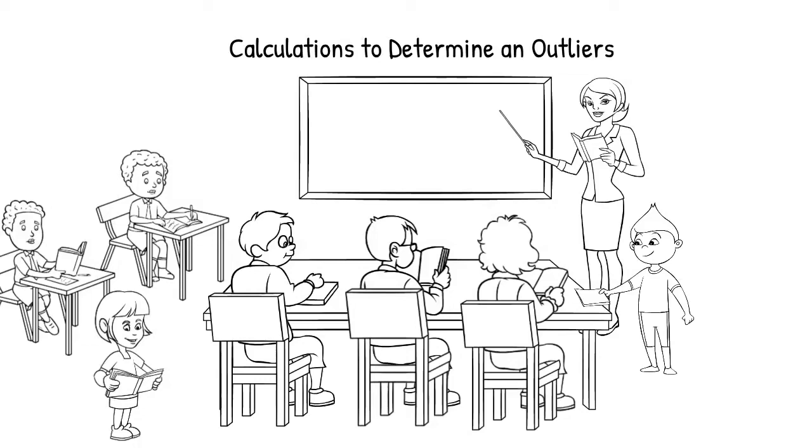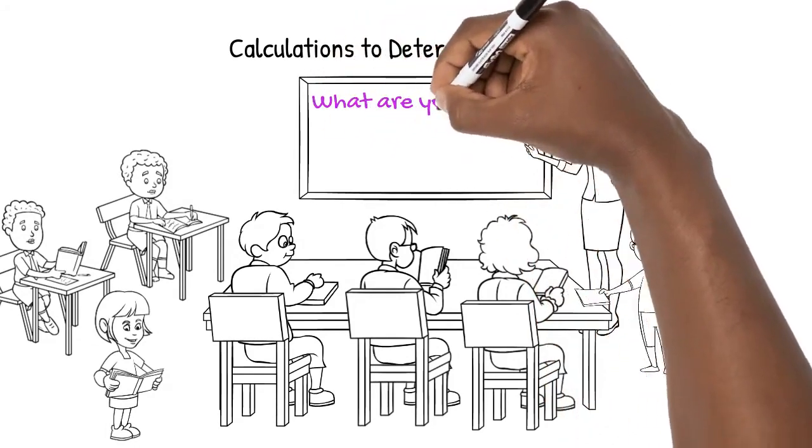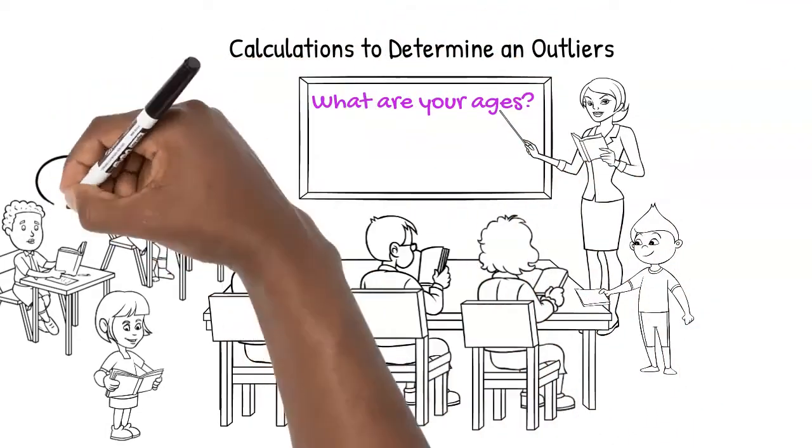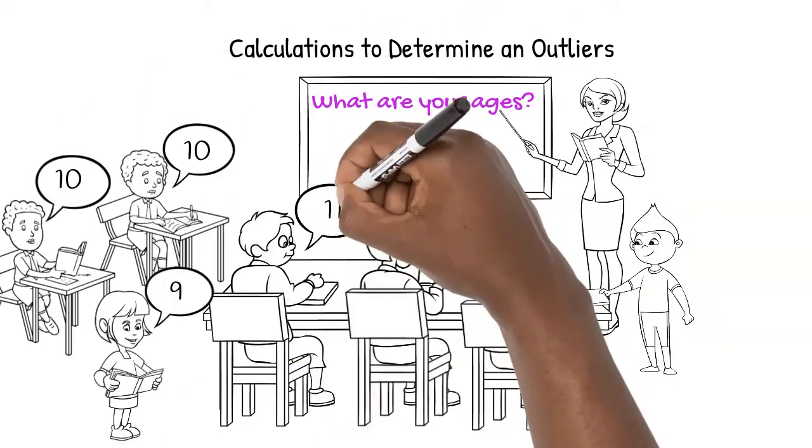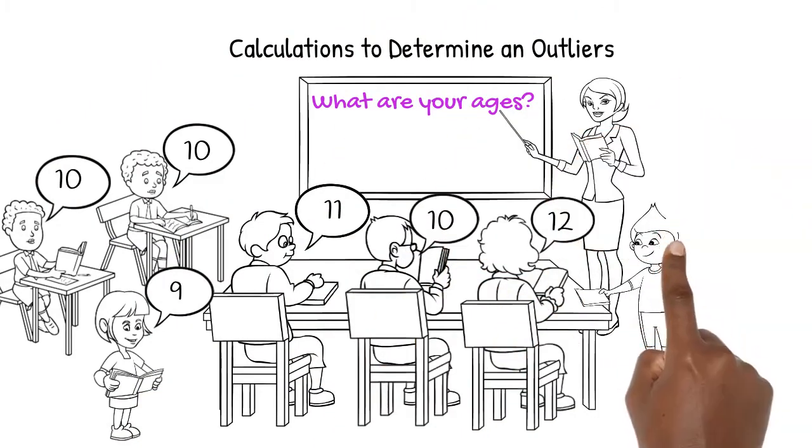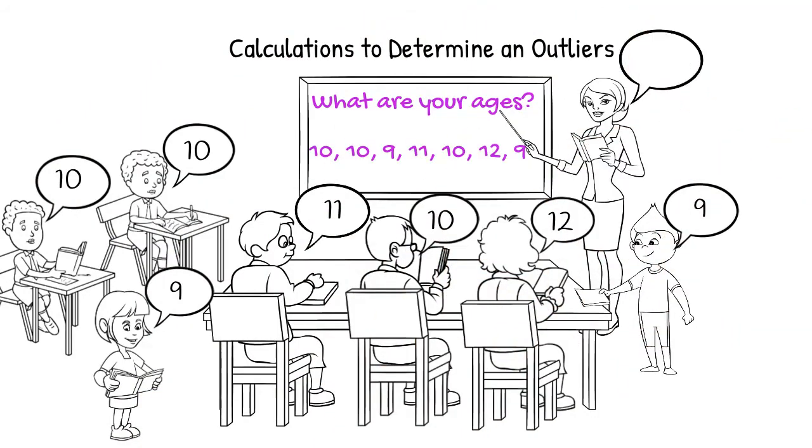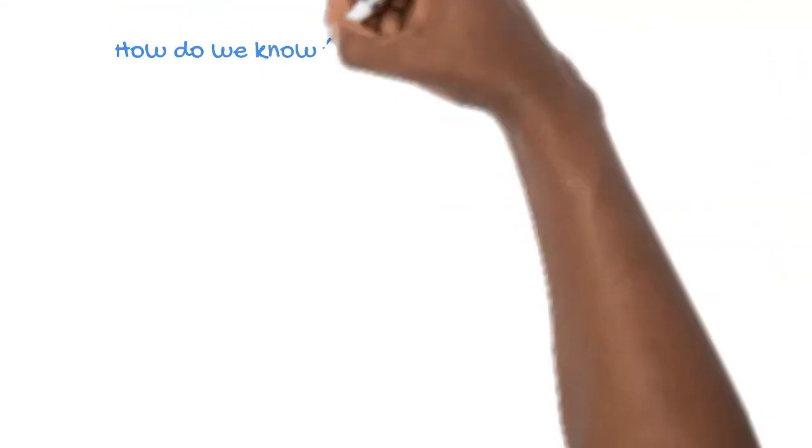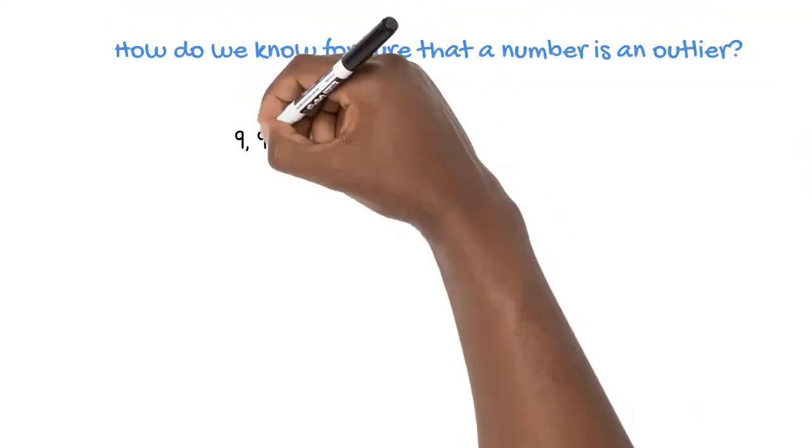In this video, we'll be looking at how to officially determine whether a number is an outlier within a set of data. You may recall that in a previous video, we looked at the ages of people in a classroom and determined that if we add the teacher's age, this is an outlier because the number stands out amongst the other ages.